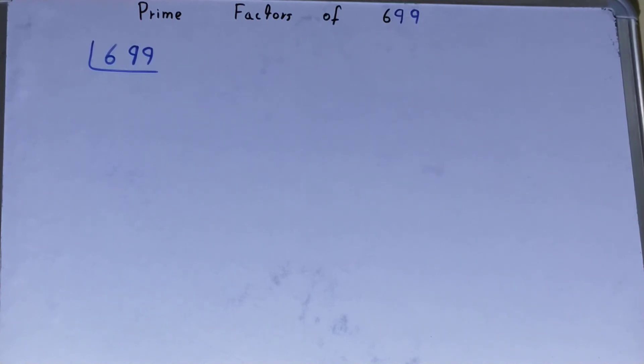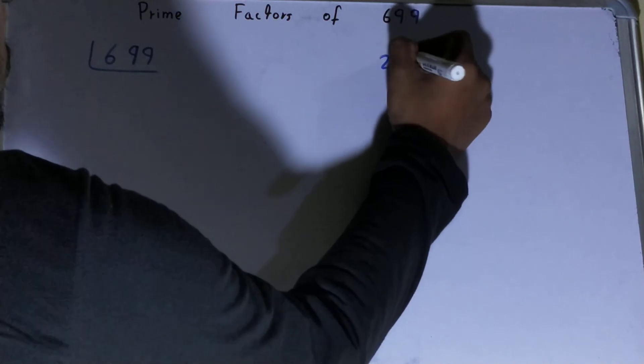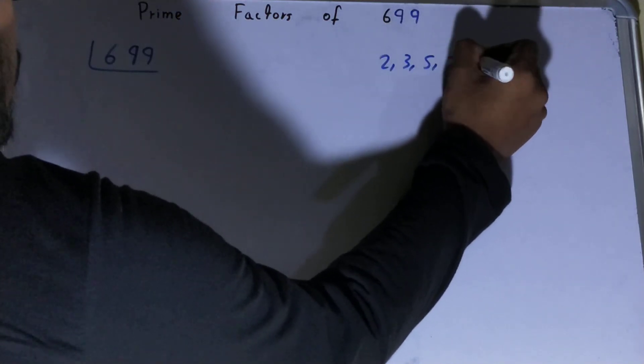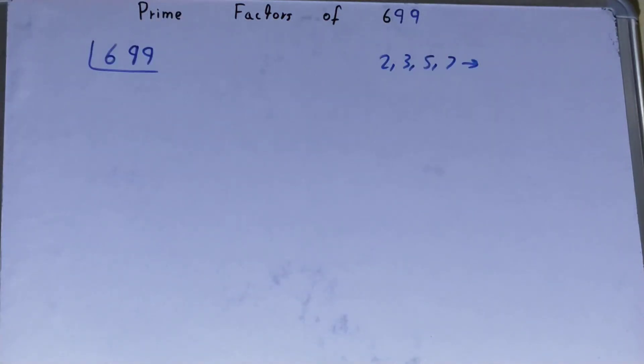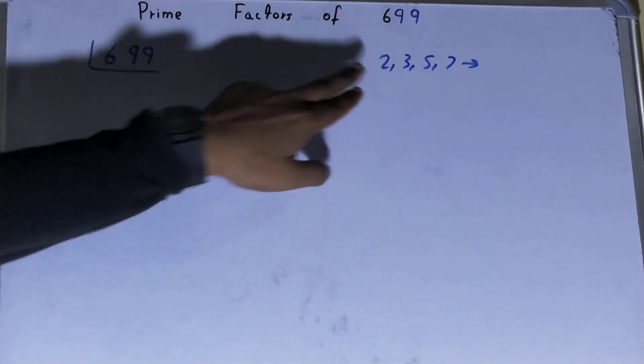Prime numbers are numbers that are divisible by one and the number itself, like 2, 3, 5, 7, and so on. We are going to start with the lowest prime number we have, that is 2.